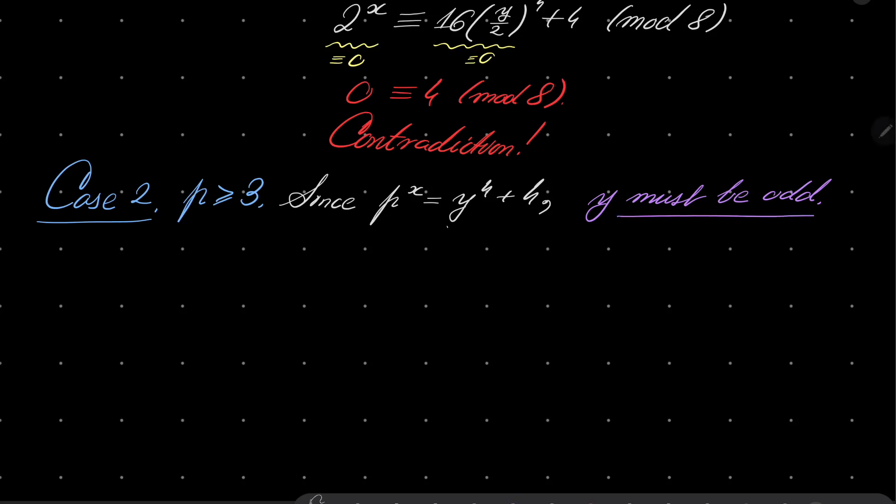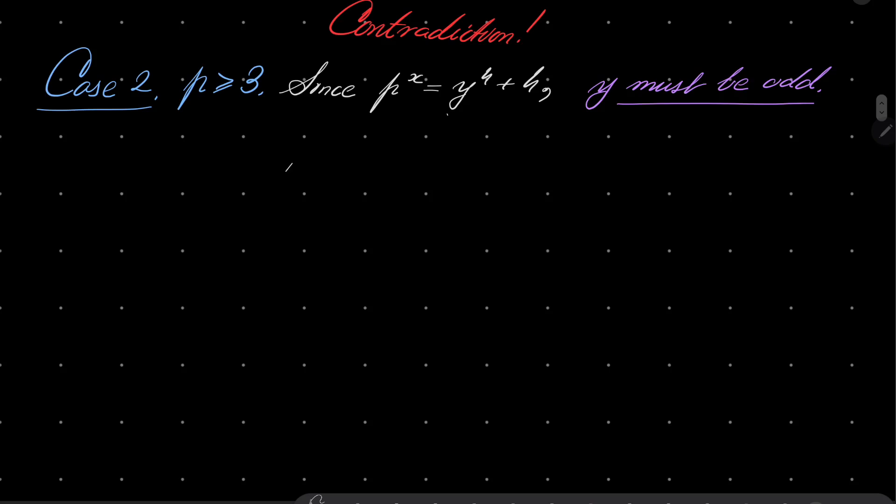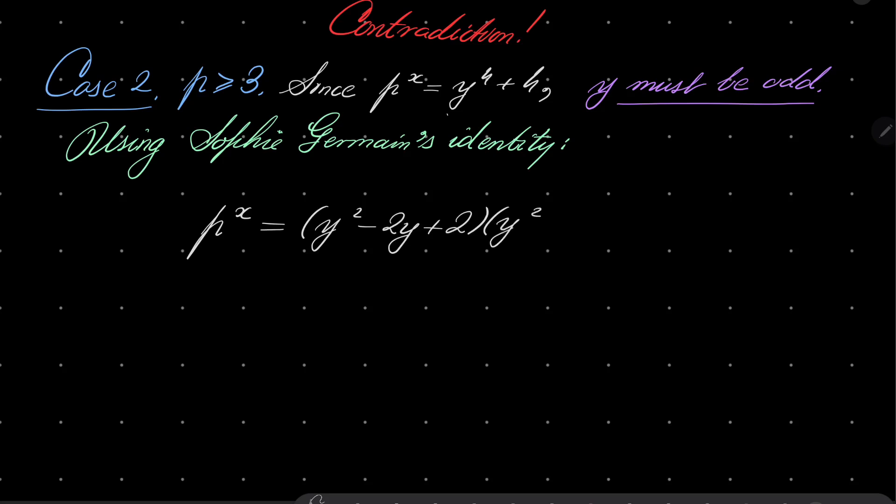And now we will do factorization of the right hand side p^x using Sophie Germain identity. We get the following: p^x and the right hand side can be factorized in this way.